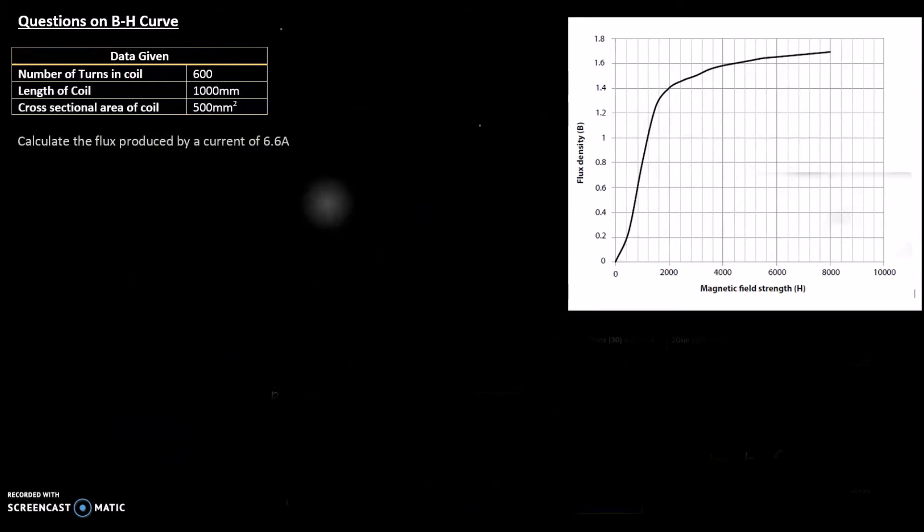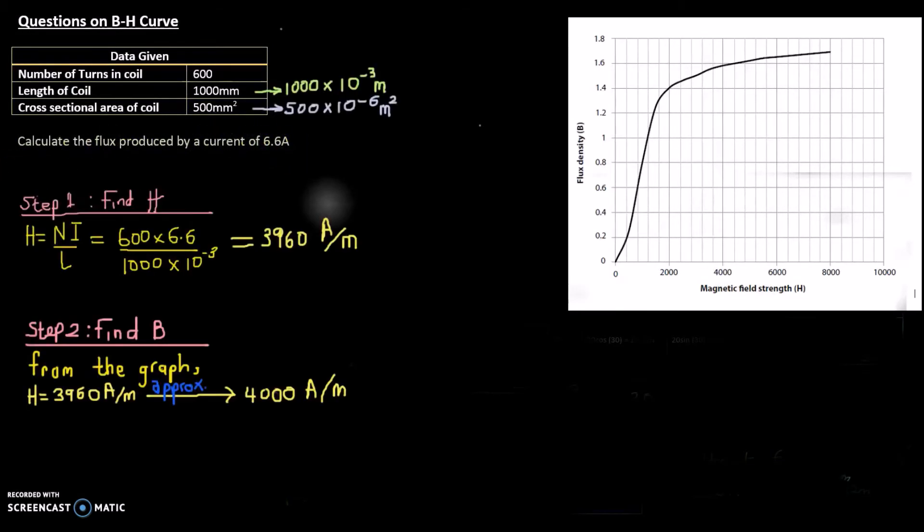Another type of question that could possibly come out is to work out the flux from a current, so given the current, asked to work the flux. Step one, find the magnetic field strength. The magnetic field strength is the number of turns times the current divided by the length. This formula will be given, and that will be 6000 times the current of 6.6 divided by your length, and that will be 3960 amperes per meter.